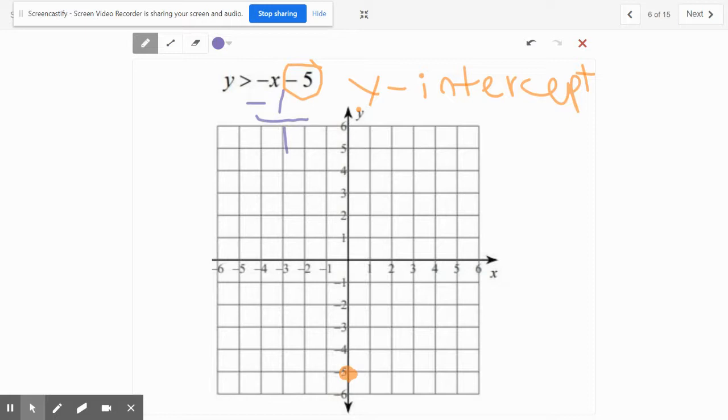Negative one over one, that's negative x, because there's a negative one invisible right there. So you're going to go down one over one and you're going to get this point here. Then you're going to go ahead and draw a straight line, but guess what? You get to be fancy with it. How do you get to do that? Because this is greater than, not greater than or equal to zero.